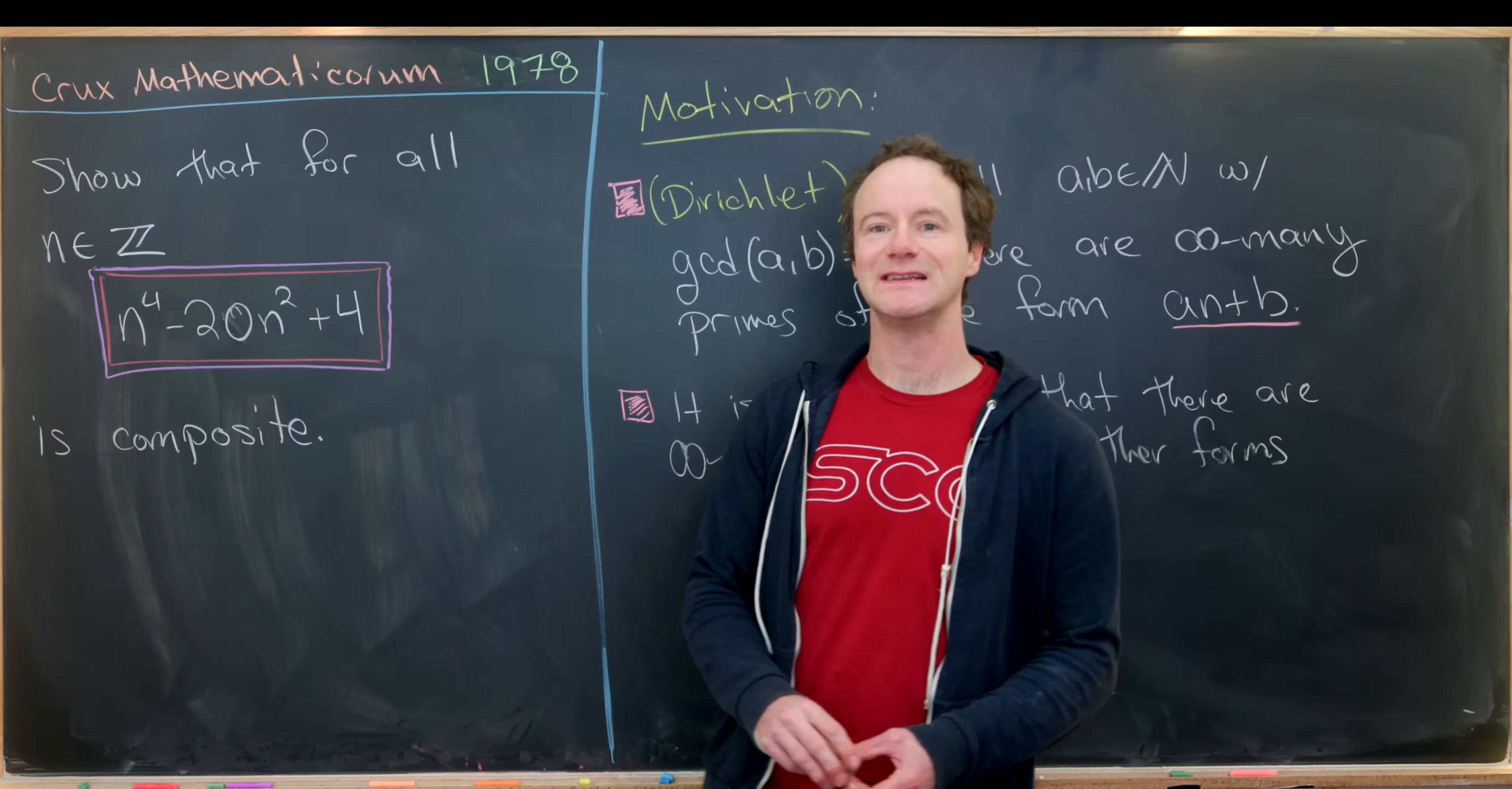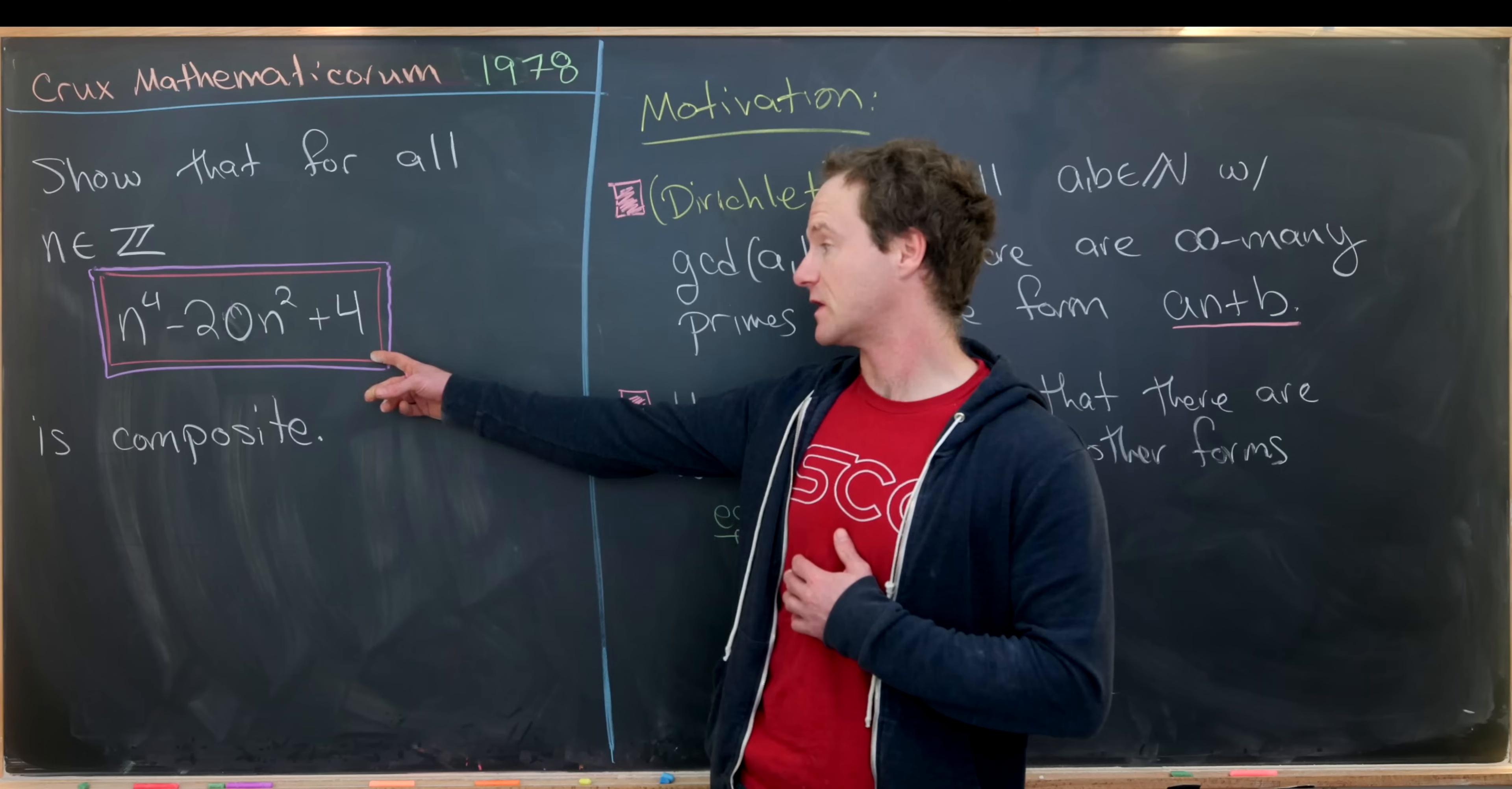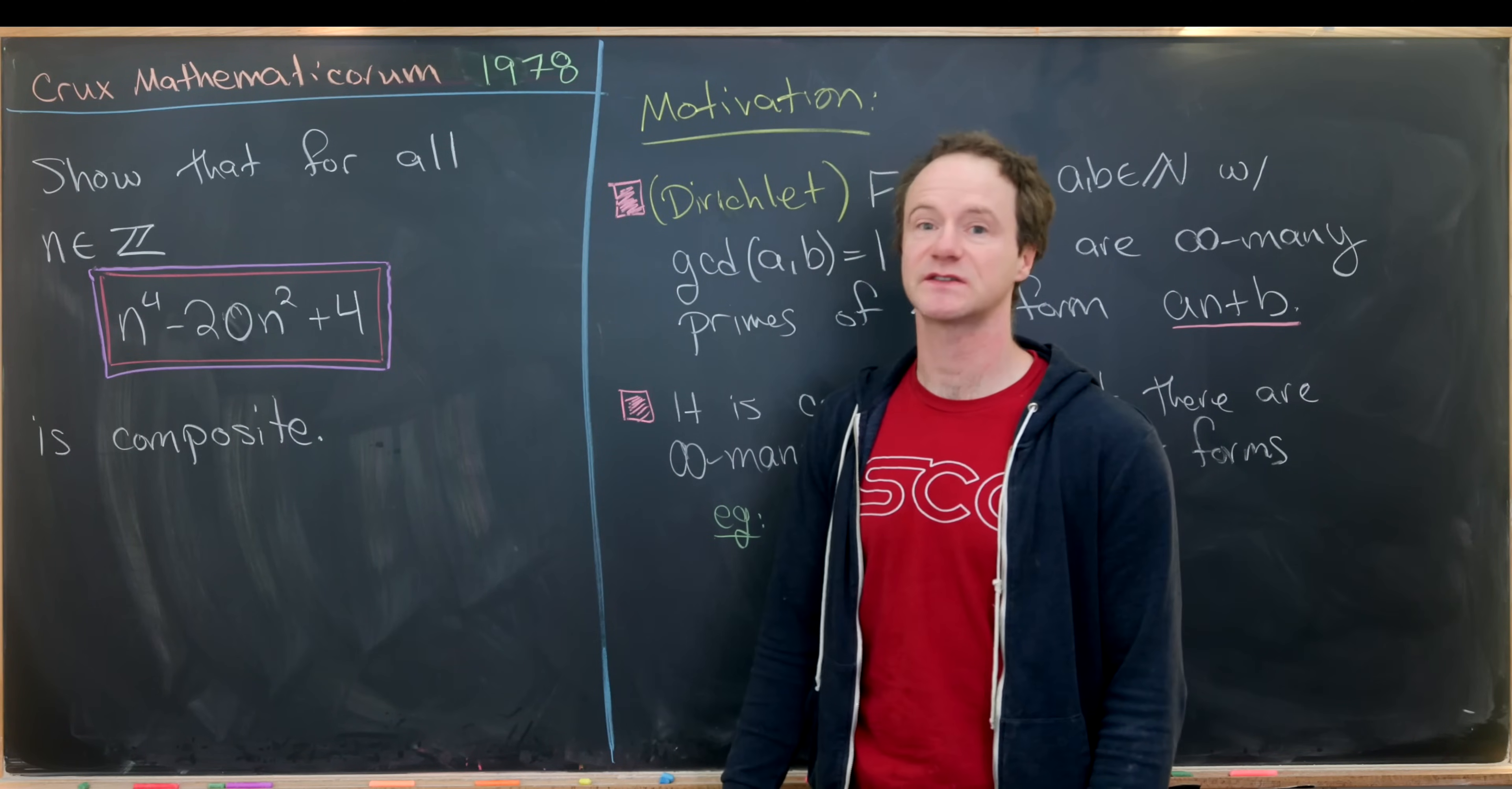Here I've got a nice problem from the 1978 issue of Crux Mathematicorum. Our goal is to show that for all integers n, the following polynomial expression is composite. That means it's never prime. The polynomial in question is n to the fourth minus 20n squared plus 4.